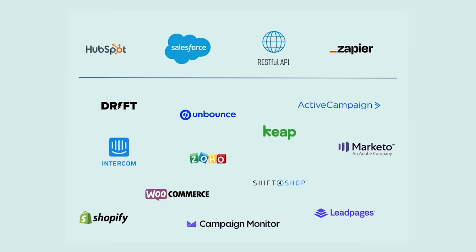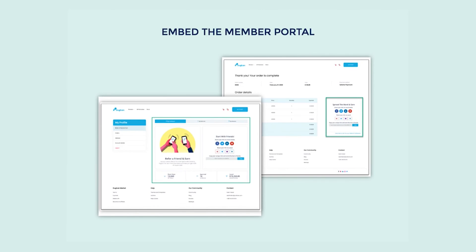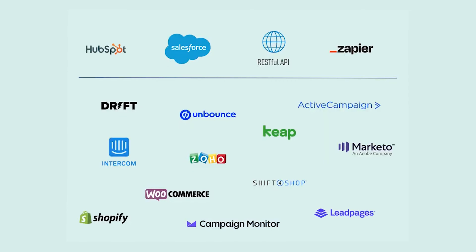If you're using a system other than HubSpot or Salesforce, that's not a problem either. Referral Rock has an open API and extensive Zapier connection, both of which open the doors wide open for you to customize and connect your referral program in limitless ways. And don't forget about those portal embed options — embedding your member experience puts the referral program directly into your customers' daily interaction with your business. Taking the time to set up these integrations allows you the freedom to truly run your referral program on autopilot and instead focus your time on other important things.